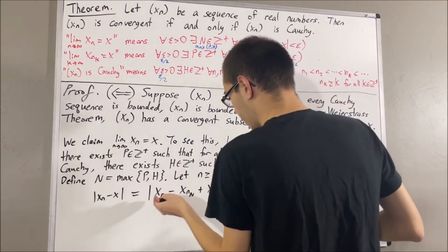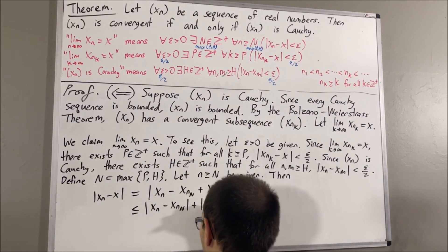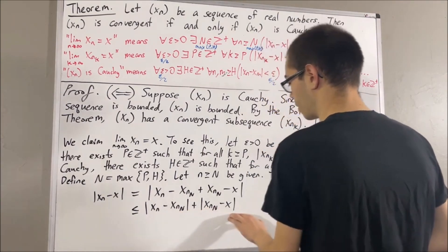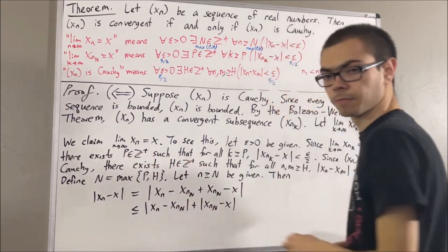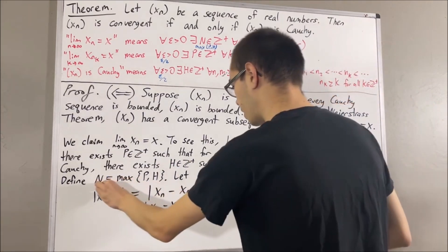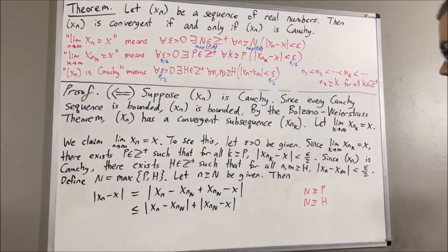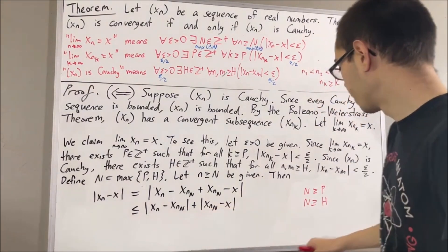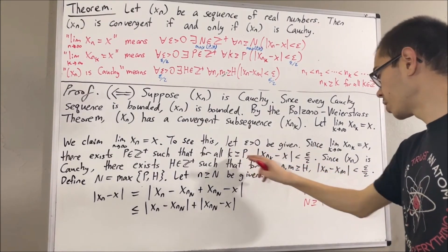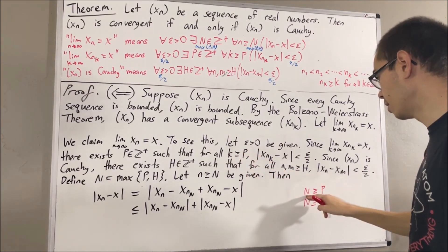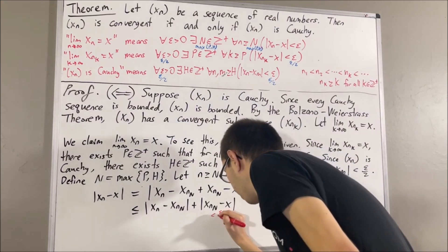To do that, let's start out by writing the left-hand side. What we're going to do is add and subtract xn sub capital N. By the triangle inequality, the absolute value of this entire thing is less than or equal to the absolute value of xn minus xn_N plus the absolute value of xn_N minus x. The point is that these two are less than epsilon over two. Since capital N is the maximum of p and h, we know that capital N is greater than or equal to p and greater than or equal to h. Since capital N is greater than or equal to p and this statement works for every integer greater than or equal to p, taking k to be capital N, we have that the absolute value of xn sub capital N minus x is less than epsilon over two.